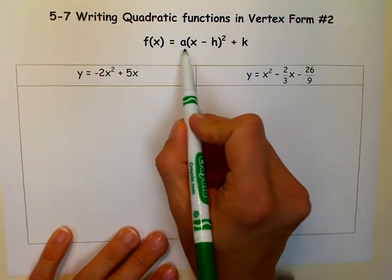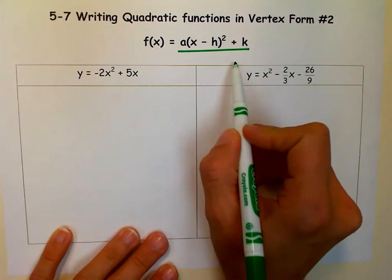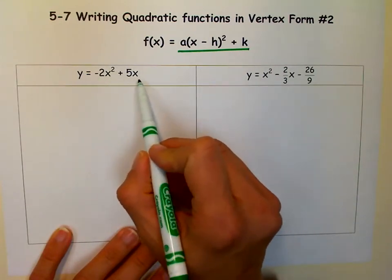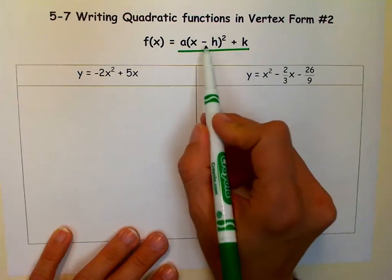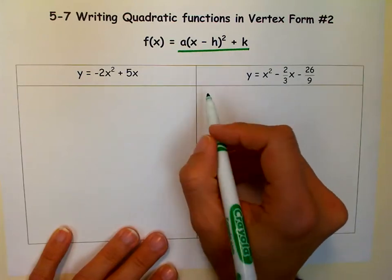And remember, vertex form is this guy right here. So notice that it's in ax squared plus bx plus c form, and we're going to get it into this form. To do that, we complete the square.